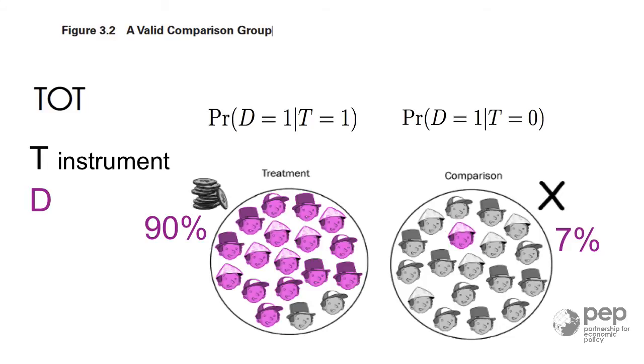Intuitively, if not everyone who is in the treatment group participated, but we still observe an effect when comparing the means of the two groups, then it must be that the effect of the program is quite large. Because even when diluted among those who did not benefit from credit, we can observe an impact. So the effect of credit is larger than what we estimate with the ITT.